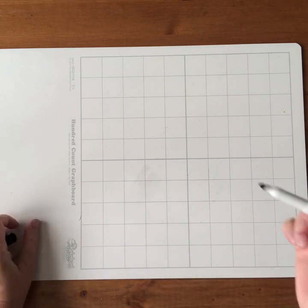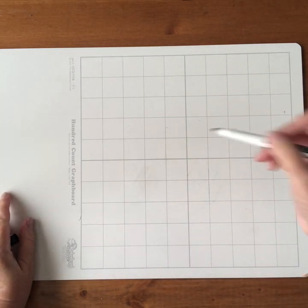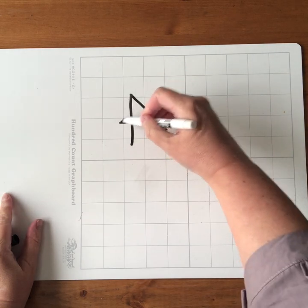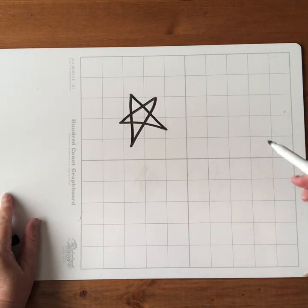So children need to know how to draw stars for this game and there's a few different ways you can teach them if they don't already know how to draw a star. This is sort of the classic star, five-point star.